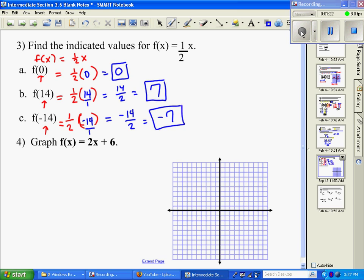Number 4 says graph f of x equals 2x plus 6. So we're going to do some graphing with function notation, but that shouldn't be a big concern because remember we said f of x is similar to saying y equals 2x plus 6.